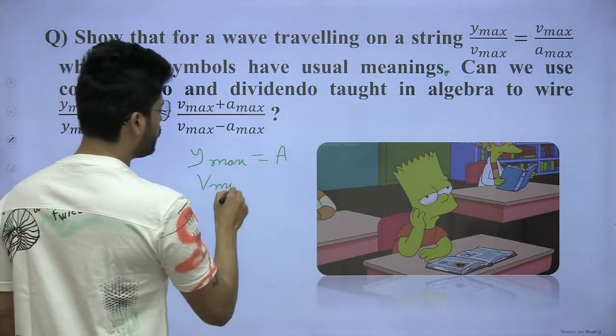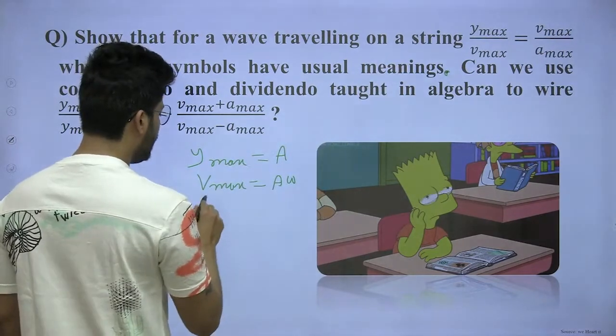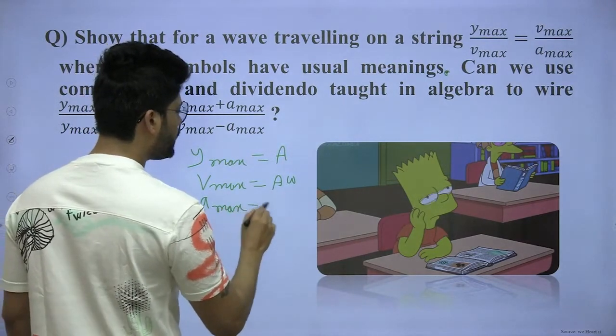What is Vmax? Maximum speed of the particle, which is A omega. Particle speed, amplitude unit. Amax is amplitude unit, which is A omega square.